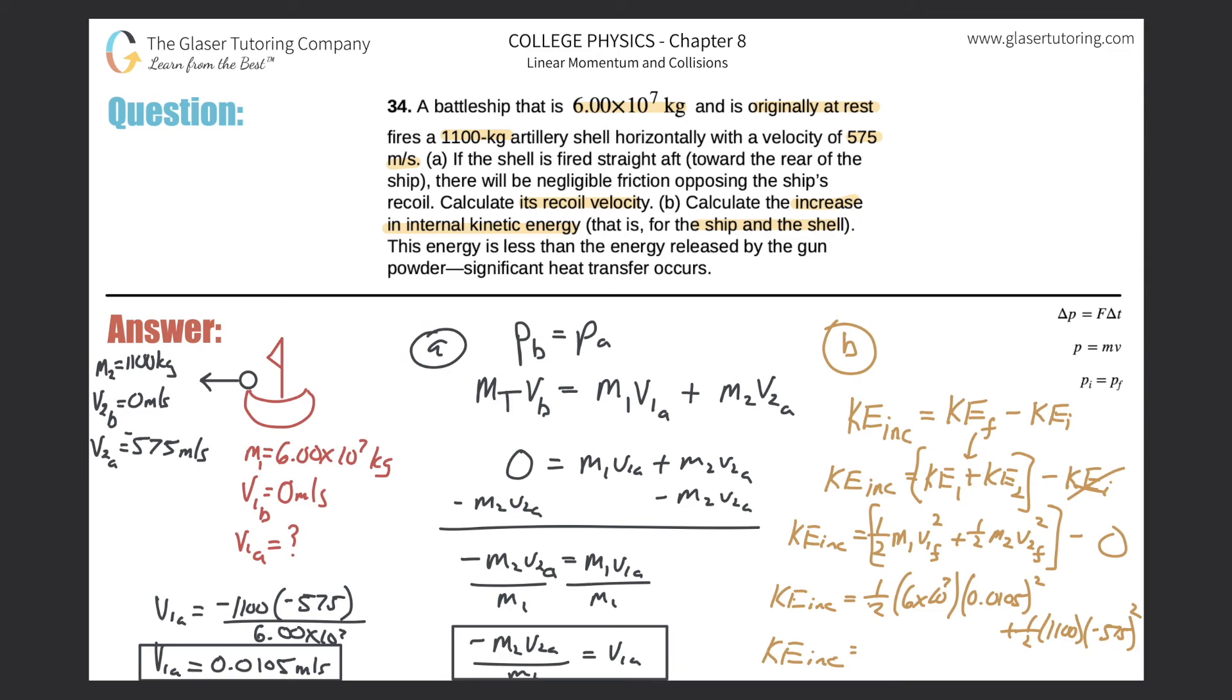So now all we have to do is just throw it into the calculator. So 0.5 times 6 times 10 to the 7th times 0.0105 squared, plus 0.5 times 1,100 times negative 575 squared. Remember, the negative is going to cancel because it's squared. And now we get a value of approximately 1.82 times 10 raised to the 8th. So it's about 182 million, and that's in terms of joules. And it just told us that the actual amount of energy was greater than this because there's significant heat that's transferred, but that's fine. So this is the increase in internal kinetic energy.